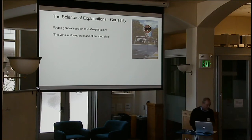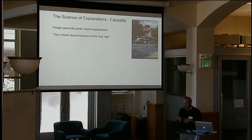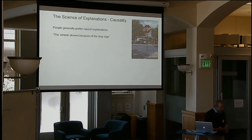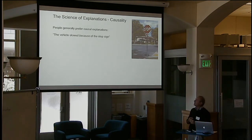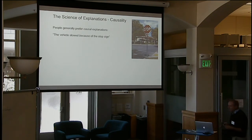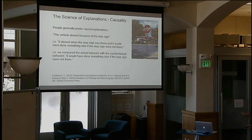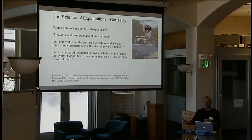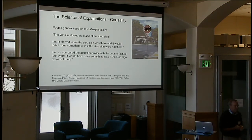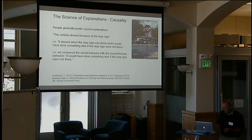There is a science of explanations within psychology. A colleague, Tonya Lombroso, is one of the leaders. One high-level finding is that when people are explaining or being explained to about physical or mechanical systems, they prefer causal explanations. For example: the vehicle is slowing because there's a stop sign. That's actually an implicit counterfactual explanation — it's very succinct. What the person actually means is: it slowed when the stop sign was there, and if there was no stop sign, it would have done something different. That's what you implicitly mean if you say 'I did something because of X' — it's an implied counterfactual on the absence of that stimulus. We'd like to mimic that behavior in the network.